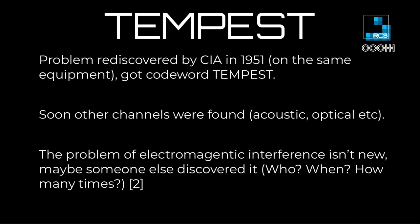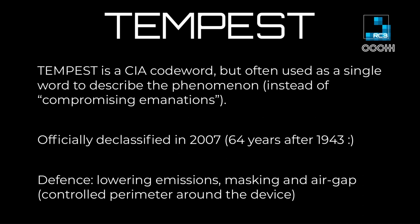Soon they started researching it and found other channels — acoustic, optical, and so on. The problem of electromagnetic interference isn't new, so it's quite possible somebody else discovered it earlier; we don't know who, when, or if it was used for anything. Tempest is a code word, but it's often used to describe the phenomenon of data leaking out of devices via radio or some other channel. It was officially declassified in 2007 — 64 years after the initial discovery — so somebody really wanted to keep it secret.